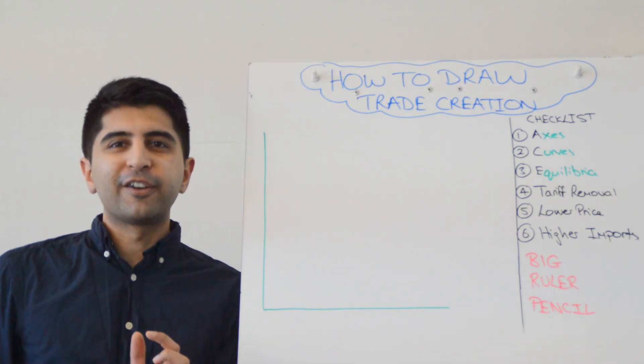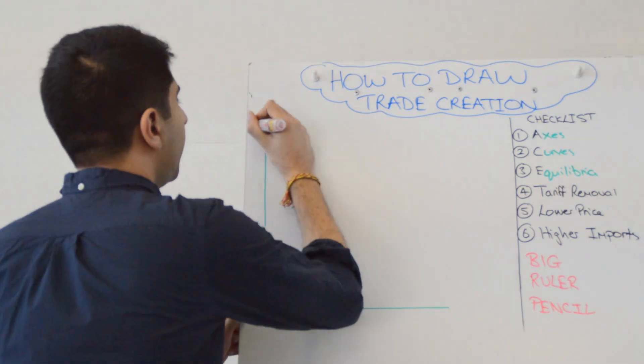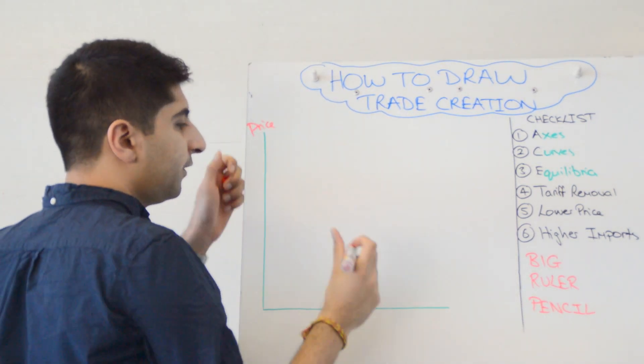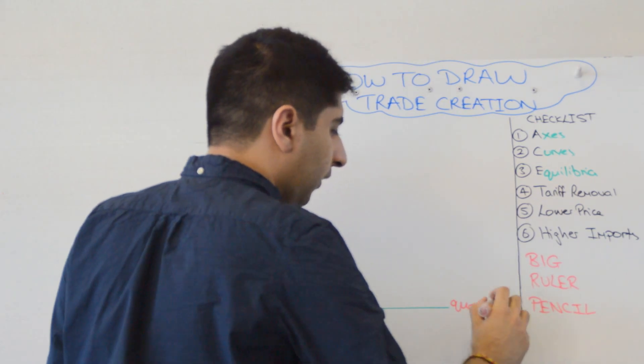Trade creation is a very simple diagram to draw. It's just the removal of a tariff. So let's get started by labeling our axis with price on the y-axis and quantity on the x-axis.